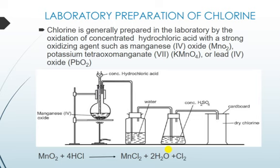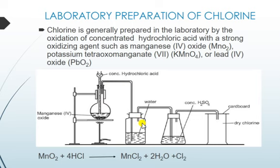We are talking about the preparation of chlorine by oxidation of concentrated hydrochloric acid with manganese dioxide as the strong oxidizing agent — the method originally used by Scheele. The apparatus is set up as follows: a round-bottomed flask is connected to a thistle funnel and suspended using a clamp stand. A source of heat is brought underneath the round-bottomed flask.